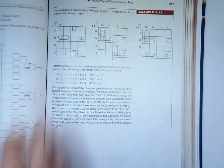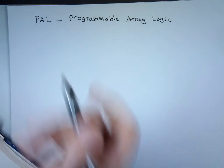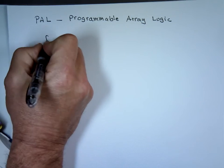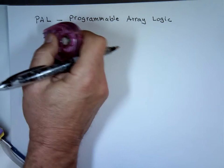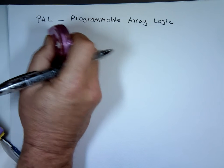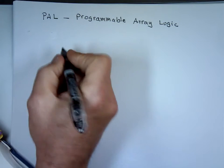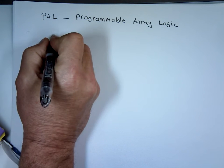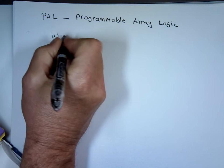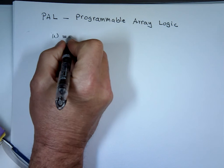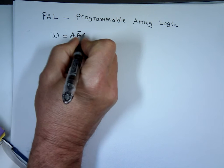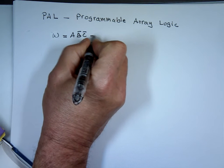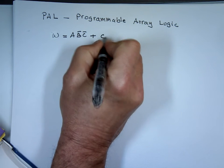Let's take an example. I have this function — I'll use W, because I'm using A, B, C for input. F equals A, B-bar, C-bar plus C, D. X is A-bar, B, C-bar plus A-bar, C, D plus A, C, D-bar.